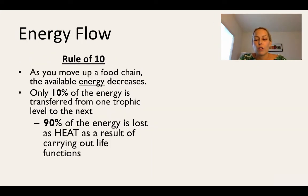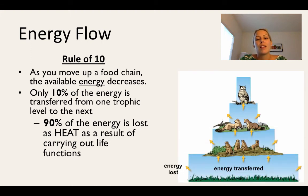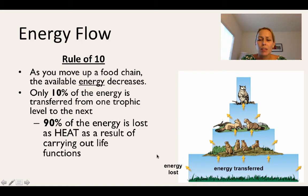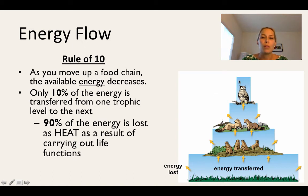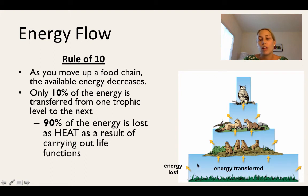The rule of 10 refers to the amount of energy transferred from one trophic level to the next. As you move up each trophic level, 90% of that energy is lost as heat as a result of cells carrying out normal cellular functions. Only 10% of the energy is available to the next trophic level. On a test or quiz, you will be asked to calculate how much energy is available at each trophic level given a specific starting amount.